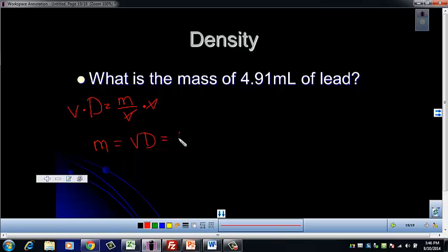We have a volume of 4.91 milliliters. If you look on the front page of your reference table, there's the density for lead. The density for lead is in grams per centimeters cubed. That's a problem because milliliters and centimeters cubed are not going to cancel.